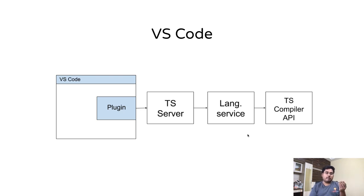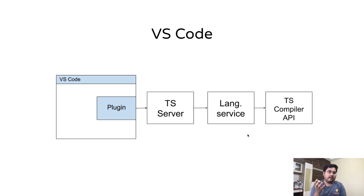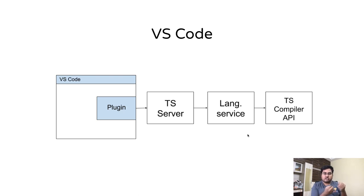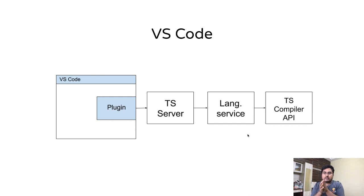Language Service gives you all the higher-level refactorings and virtual file implementation. But internally it uses something lower-level called the TS Compiler API. Language Service implements the higher-level things, but it must be using some lower-level constructs to build those utilities. That's what the TS Compiler API is — and that's the part we'll go into today.